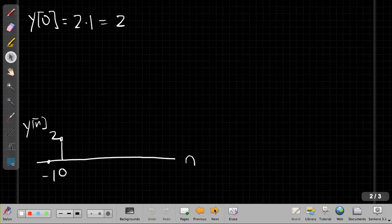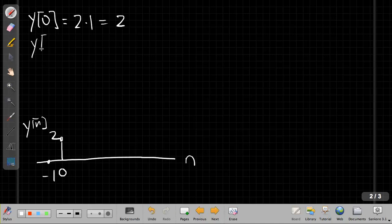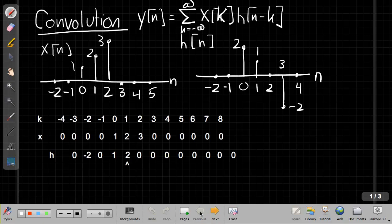So if I hop ahead to the next page, I get, got to get my pen back, y of 1 is 1 times 1 plus 2 times 2, which is 5. So I draw that here. At time 1 I have 5. And I can just go back and repeat the same process.